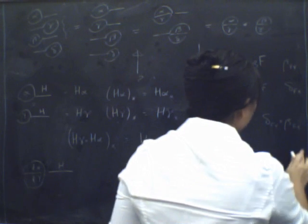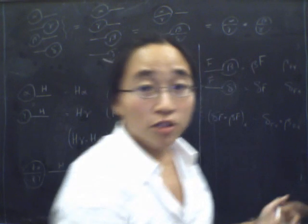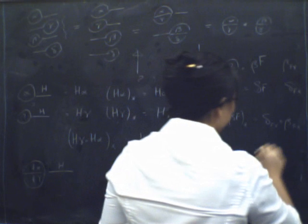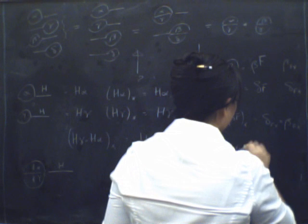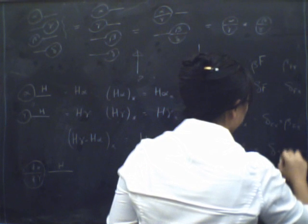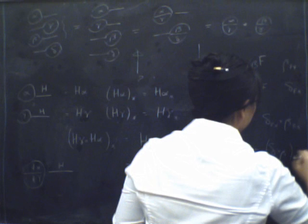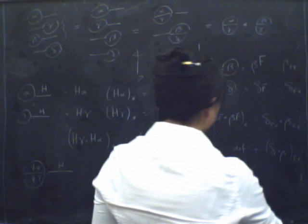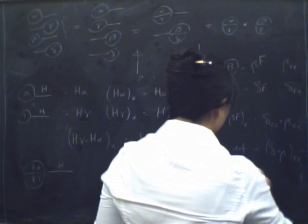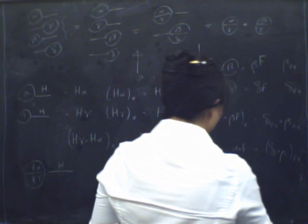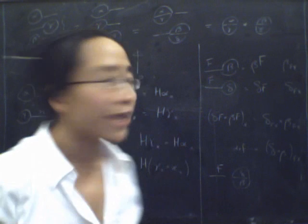And we know by the definition of vertical composition of natural transformations, that simply is by definition the component of delta composed with beta at F of X. So that's the same as the vertical composite delta beta with an F whiskered onto the beginning of it.